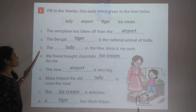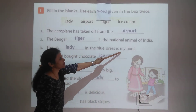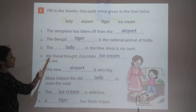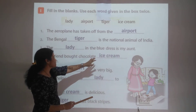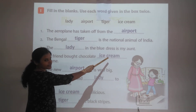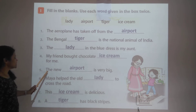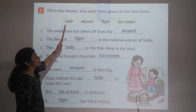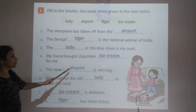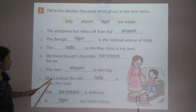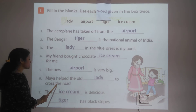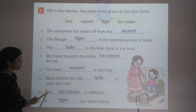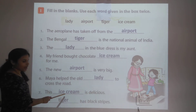Third blank: The lady in the blue dress is my aunt. Fourth blank: My friend bought chocolate ice cream for me. Fifth blank: The new airport is very big — here 'airport' is used a second time.